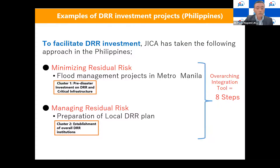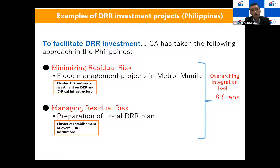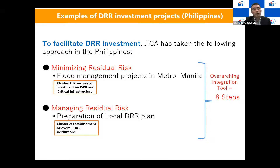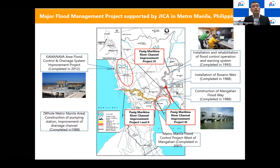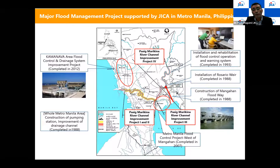JICA has supported the Philippines government, which has made a very good effort in the Manila metropolitan area. The first structural measure intervention was the Mangahan Floodway, constructed with JICA support in 1988. We still have a continuing series of structural measures — even now, up to the Pasig-Marikina River Channel Improvement Project, currently in stage four. So more than 30 to 40 years of effort have been made to reduce the fundamental part of extensive risk.